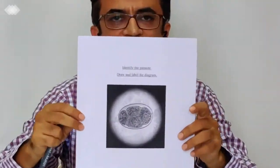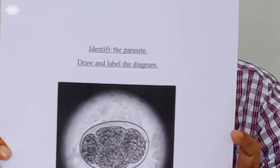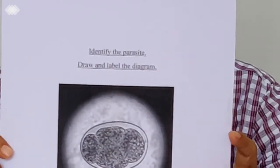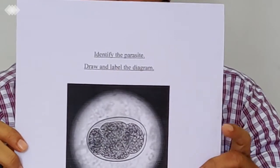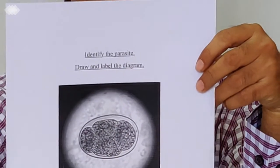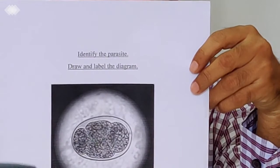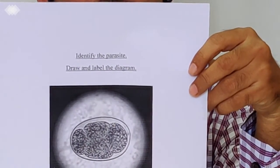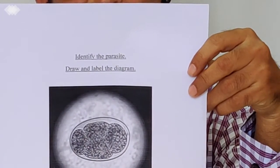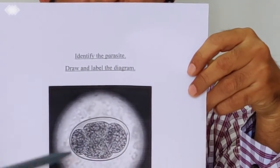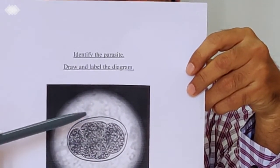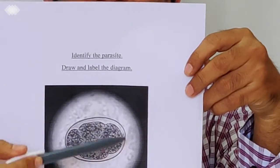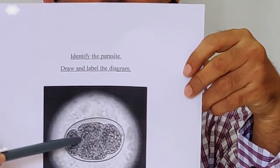Next, this is hookworm, another very common intestinal helminth. One of the major cause of anemia in developing countries. Now, you see, this egg, the size is around roundworm only, around 60 to 80 micrometer. But, it is known by its appearance. And you can see a clear shed and segmented oval.